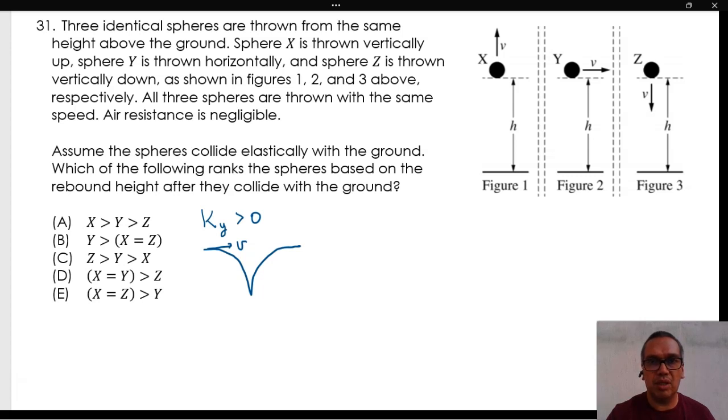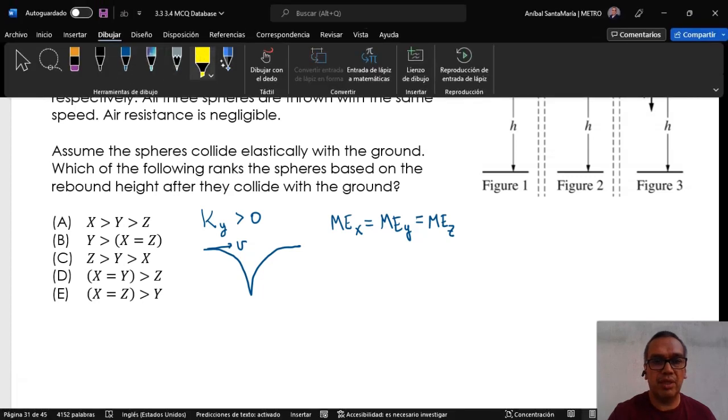All three spheres start with the same speed, which is to say they have the same kinetic energy and potential energy at the beginning of motion. Since spheres X and Z reach a speed of zero at the highest point, they will certainly go higher than Sphere Y. Therefore, the correct answer is E.